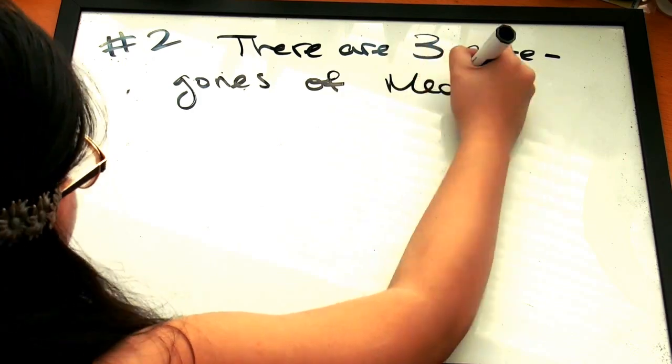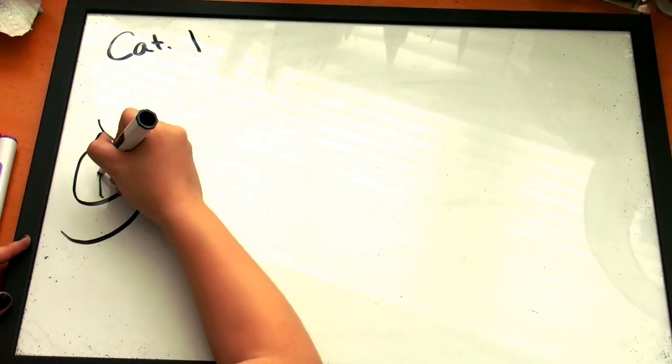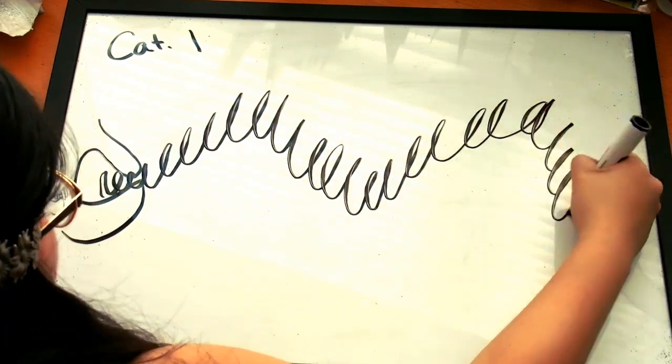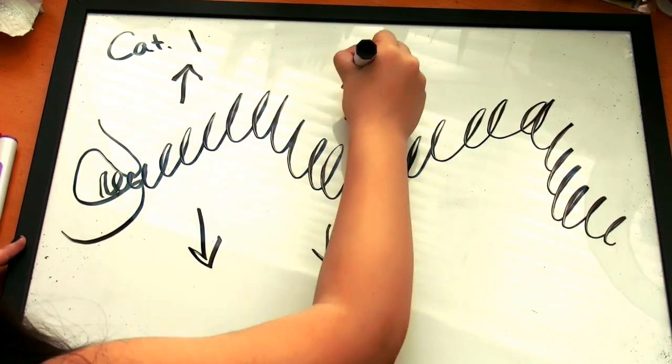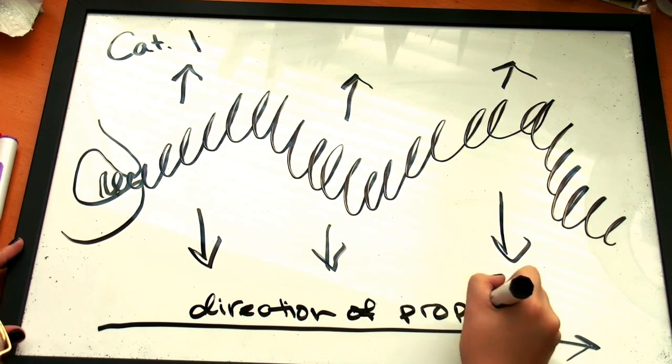Number two, mechanical waves can be split into three categories. The first is a transverse wave. In a transverse wave, the wave is oscillated perpendicularly to the direction of propagation. An example is when a spring is shaken up and down. The direction of propagation is perpendicular or towards the right.